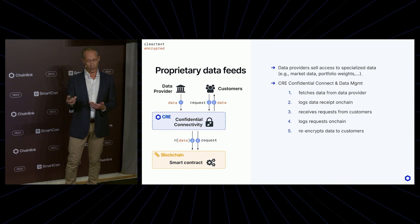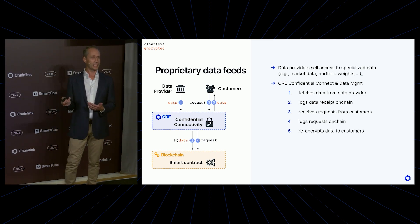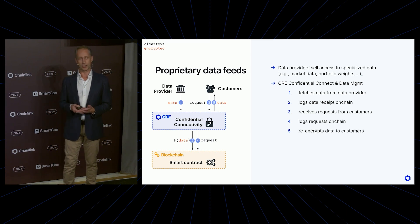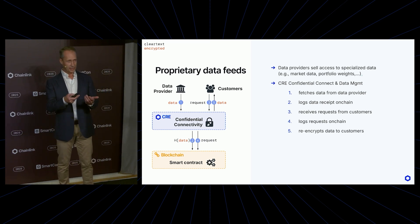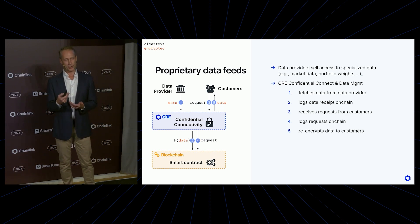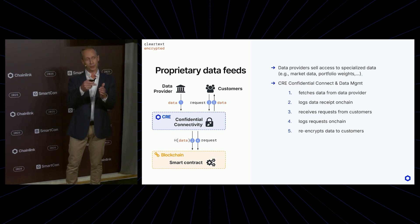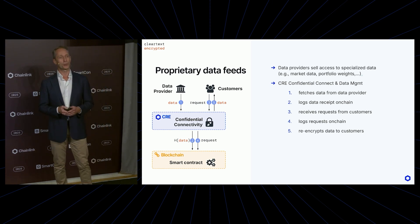We can easily solve that with confidential compute. We can have the confidential connectivity layer absorb the data — fetch it from the data providers in encrypted form, store it in encrypted form, log the receipt of the data on chain — and also accept requests coming from customers through confidential connectivity, log the requests on chain, and re-encrypt that data to only those customers who are allowed to request it and did request it.